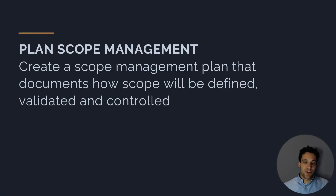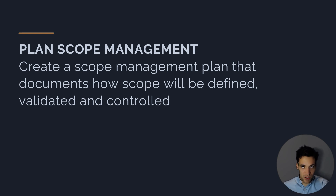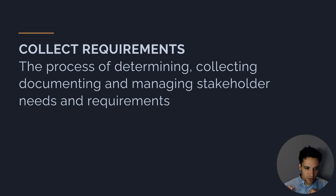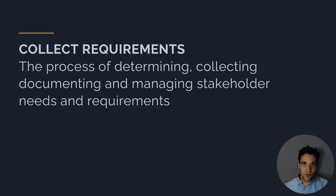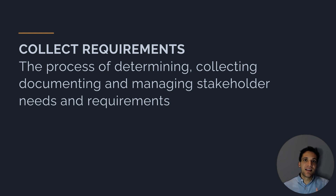The next concept is planning scope management. Remember in section two we're going to go through all of these in much more detail, but planning scope management is creating a scope management plan that documents how scope will be defined, validated, and controlled. All our management plans are the 'how' of the project — we're not defining project scope in the scope management plan, we're talking about the process through which we'll manage it. The next concept is collecting requirements — determining, collecting, documenting, and managing stakeholder needs and requirements. There are all these organizations that are project influencers with certain needs they want the project to fulfill, so we go through a formal process to understand them and integrate them into our project scope.